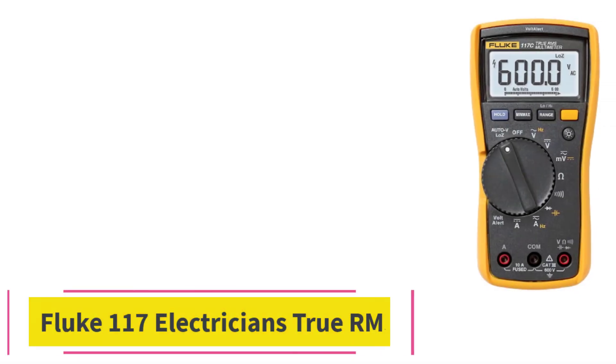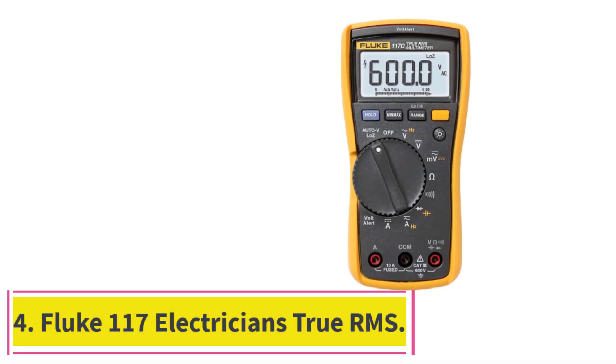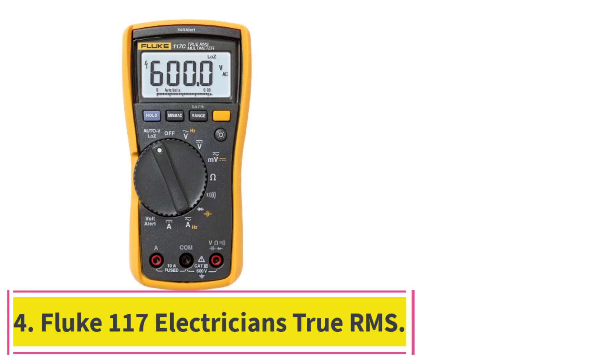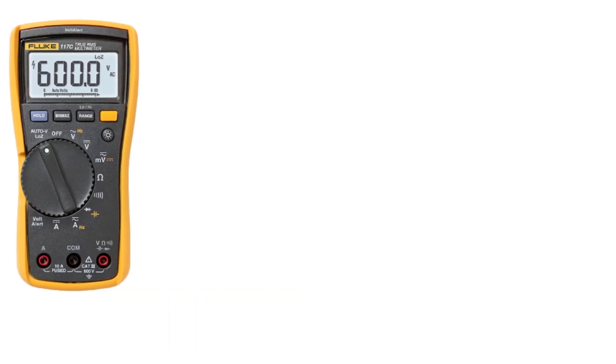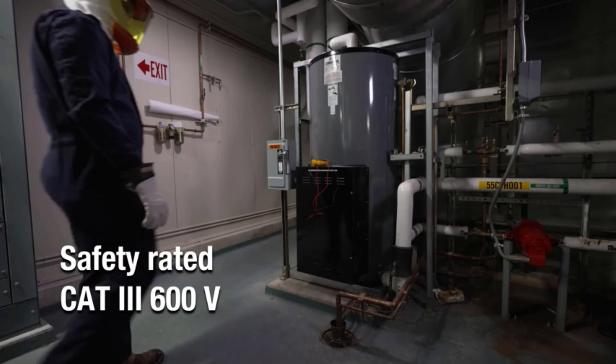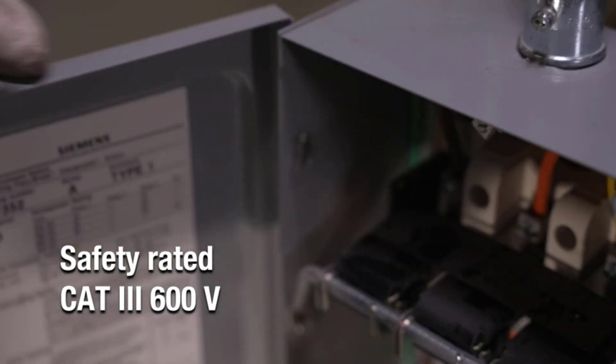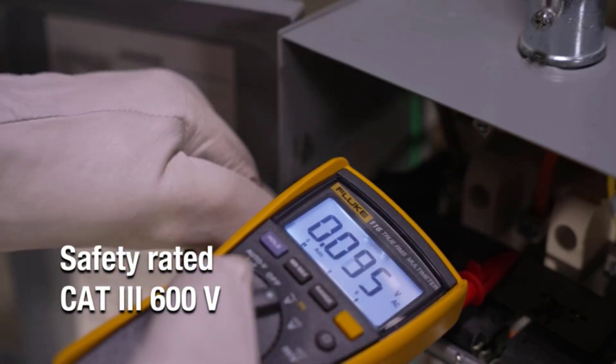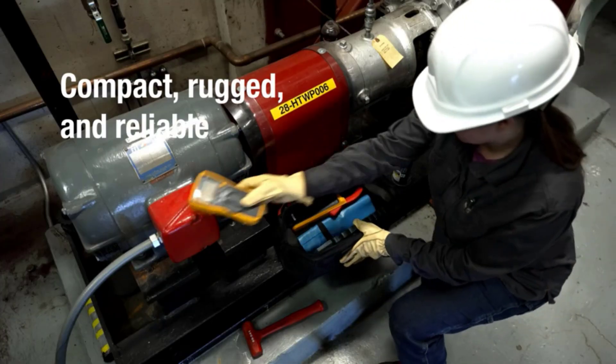At number 4, Fluke 117 Electrician's True RMS. The Fluke 117 is a highly technical meter for highly technical work. Offering plenty of advanced features and functions, this DMM is designed with electricians in mind, especially when it comes to taking AC measurements.